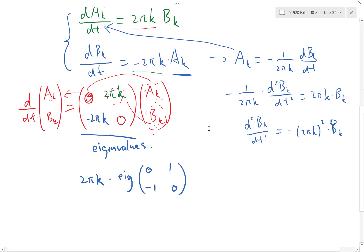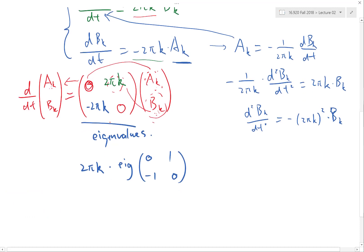Which means the solution of this is going to be e to the plus minus i times 2πK, so that's the eigenvalues of this matrix times t. And what is that? Just the harmonic oscillations. It's with the frequency of 2πK.